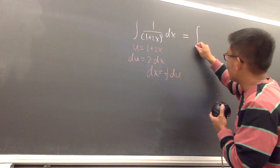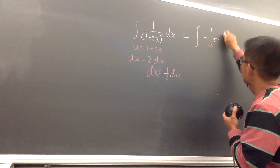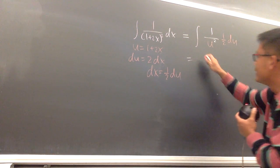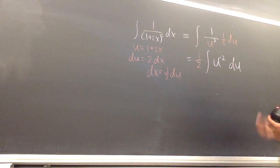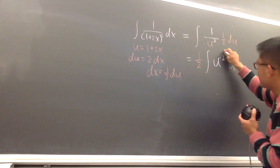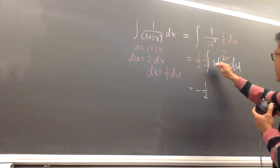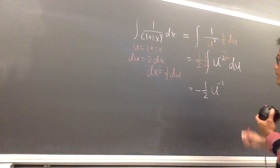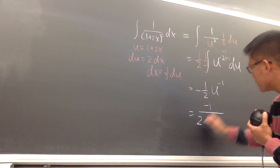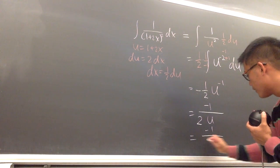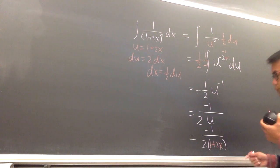Taking this integral into the u world: we have the integral of 1 over u squared, times 1 half du. The 1 half moves to the front, giving one half times the integral of u to the negative 2 du. Integrating: add 1 to the exponent — negative 2 plus 1 is negative 1 — and divide by negative 1, giving negative 1 half times u to the negative 1. We don't need the plus C since we're in the middle of integration. That simplifies to negative 1 over 2 times 1 plus 2x.